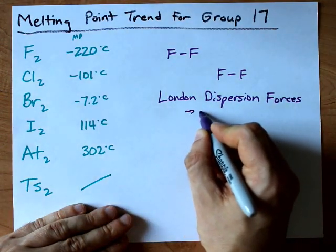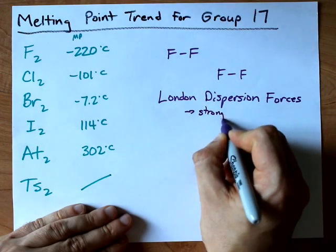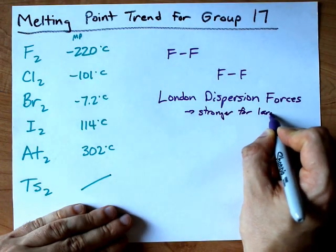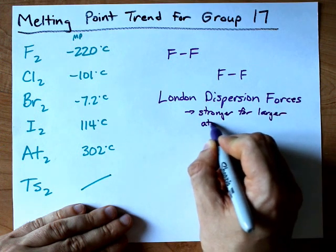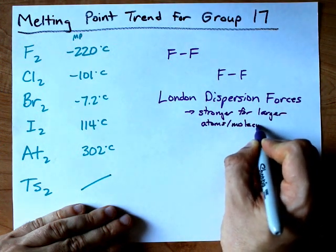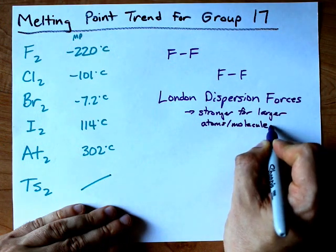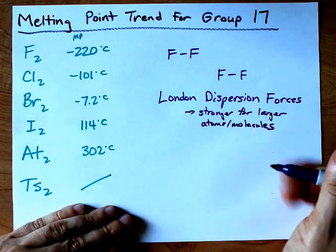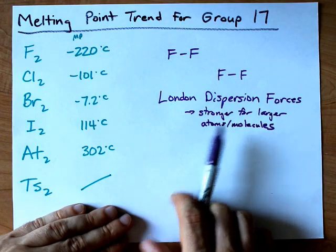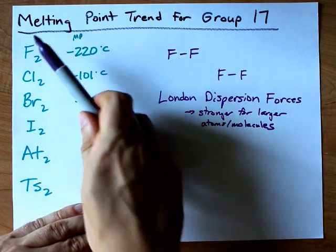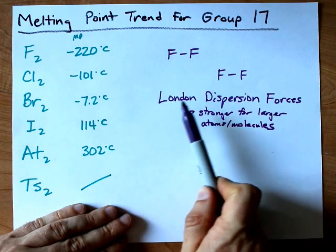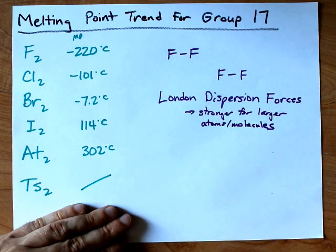London dispersion forces are stronger for larger atoms and thus larger molecules. It actually has to do with the polarizability of the molecule, but let's just focus on size. I2 is bigger than F2, therefore it has a higher melting point because it has stronger London dispersion forces.